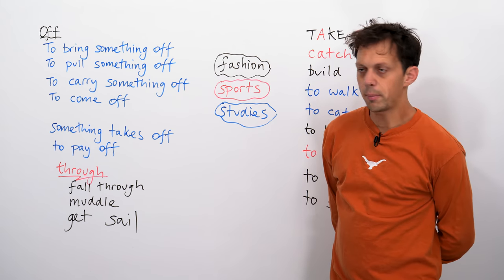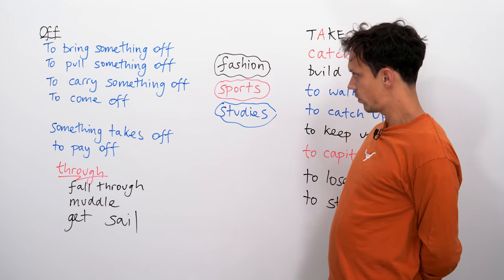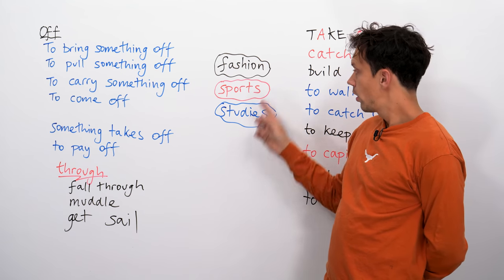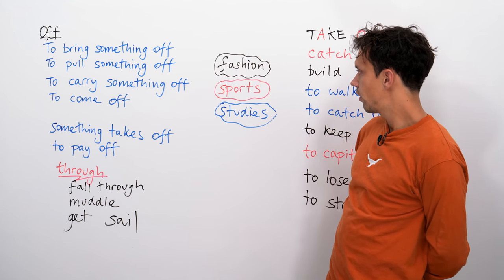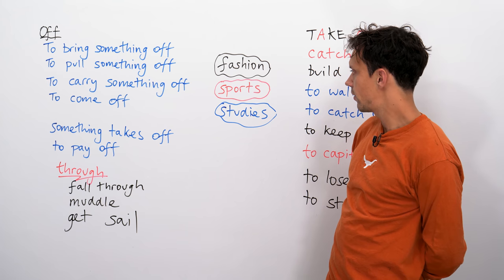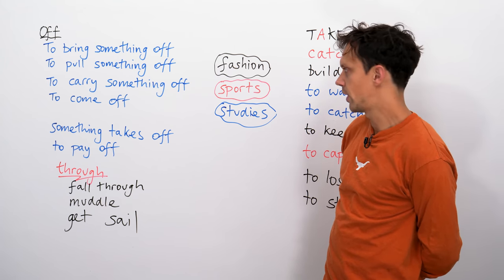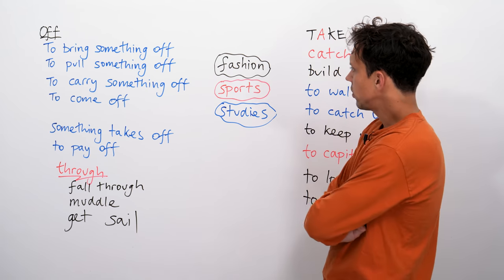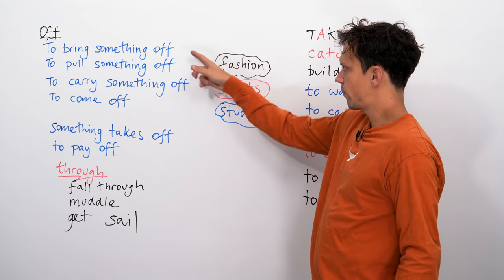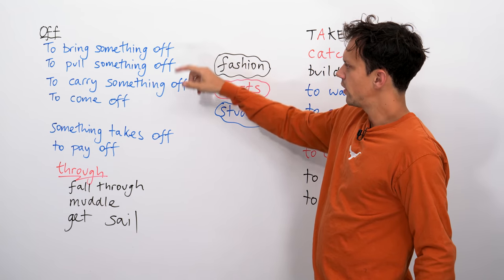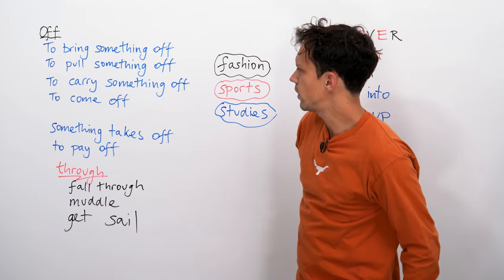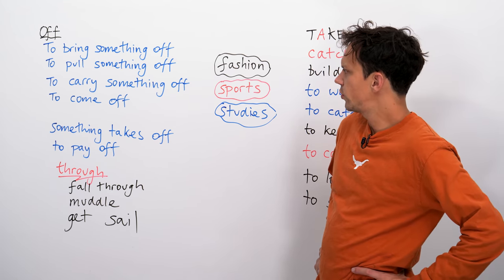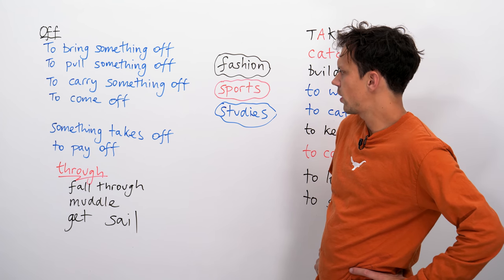So, as I said at the beginning, we're now going to try and use some of these talking about these different areas of modern life. So, let's go for fashion. Now, which of these can I talk about with fashion? To bring something off. Yeah, you really brought that off. To pull something off, to carry something off, to come off.